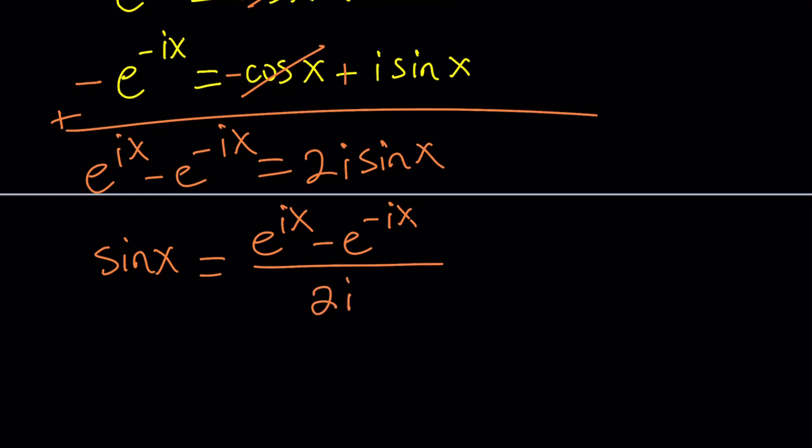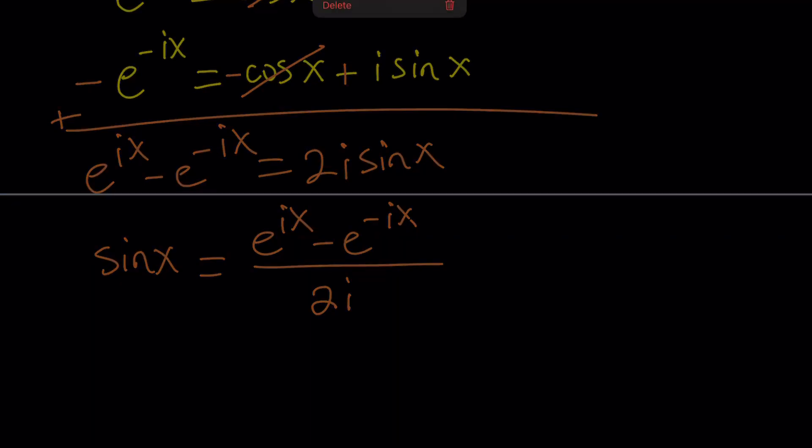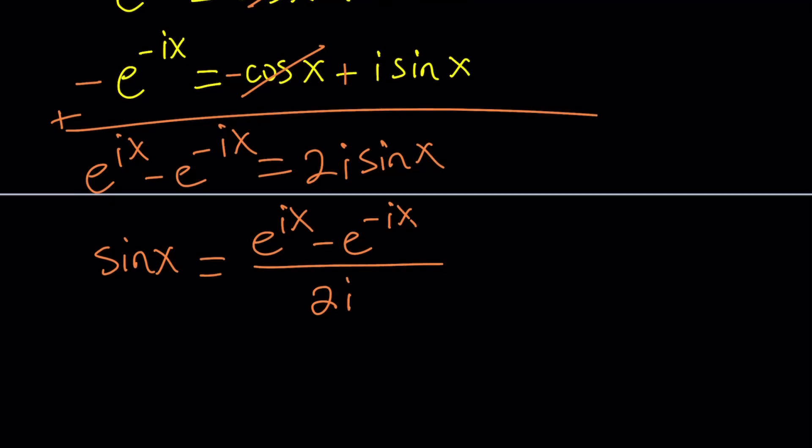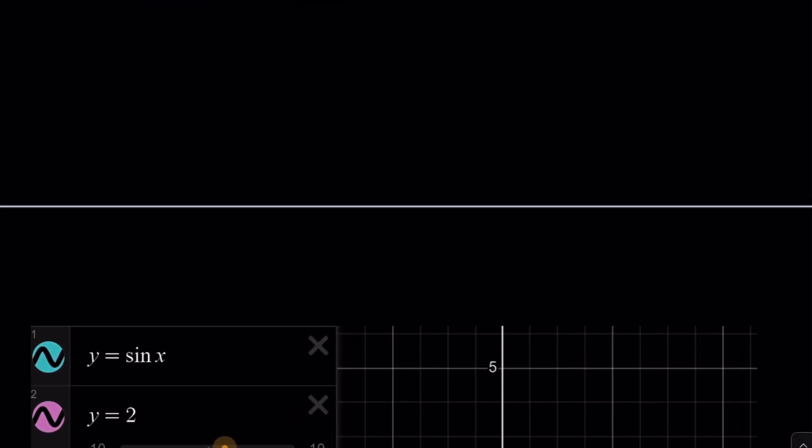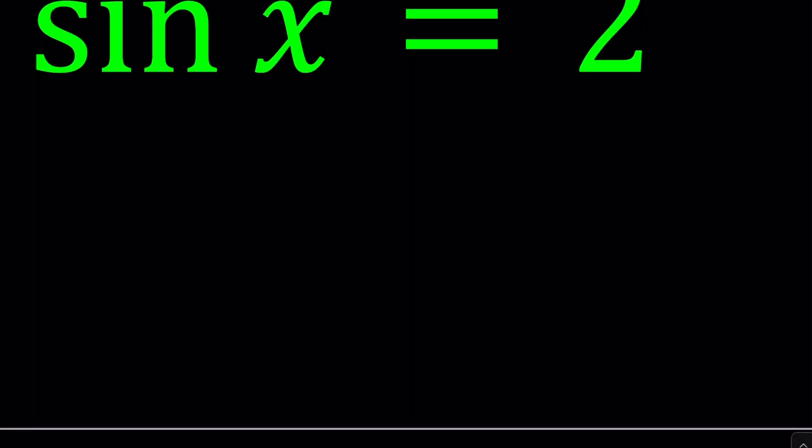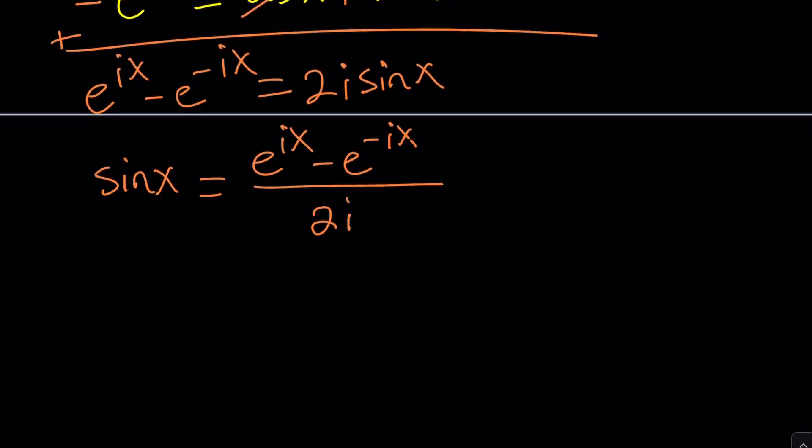Now, at this point, you can multiply the top and the bottom by negative i to get rid of the complex number at the bottom and make it real, so on and so forth. But we don't really need to do it because we're going to set this equal to a numerical value. And that is going to be 2. Remember, the original equation was sine x equals 2, right? So that's what we're going to set it equal to.